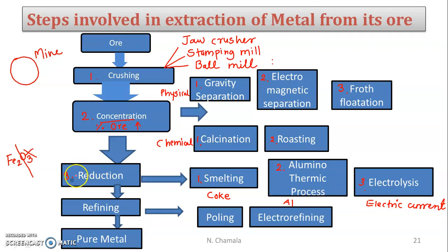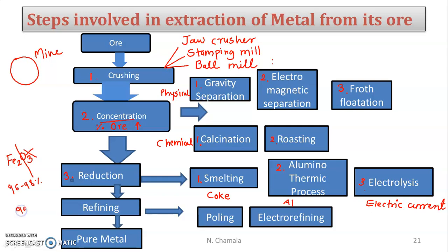After reduction is completed, the oxygen is removed and only Fe is left. At this stage I am getting 96 to 98 percent pure metal. If I want extra pure metal — 99.99 percent pure — I have to go for the next step, which is refining.